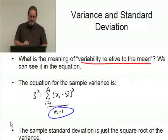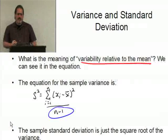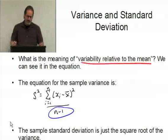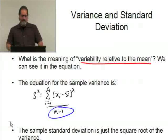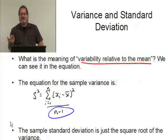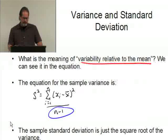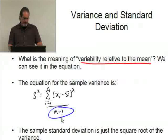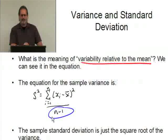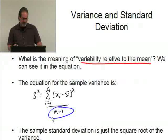In the denominator we divide by n minus 1, which is known as the degrees of freedom. We won't go deeply into that here — just trust that dividing by n minus 1 produces an unbiased estimate of the variance.